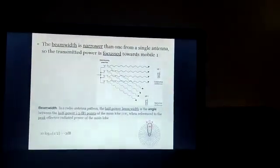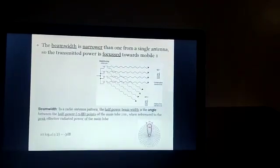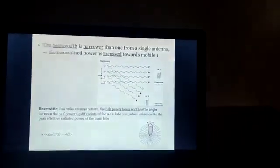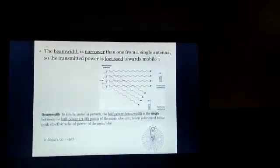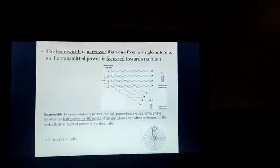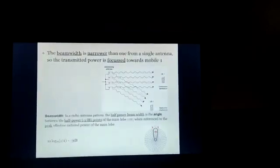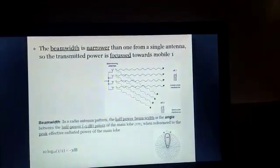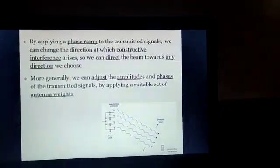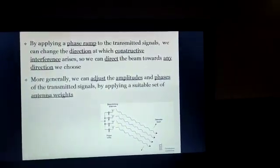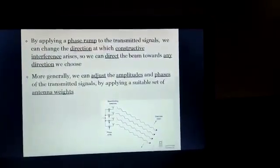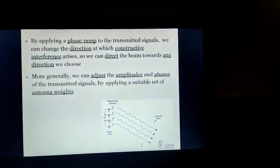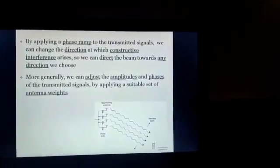The beam width is narrower than that from a single antenna, so the transmitted power is focused towards mobile one. In a radio antenna pattern, the half-power beam width is the angle between the half-power points of the main lobe, referred to as the peak effective radiated power of the main lobe. By applying a phase ramp to the transmitted signal, we can change the direction at which constructive interference arises and direct the beam towards any direction we choose. Generally, we can adjust the amplitude and phase of the transmitted signal by applying a suitable set of antenna weights.